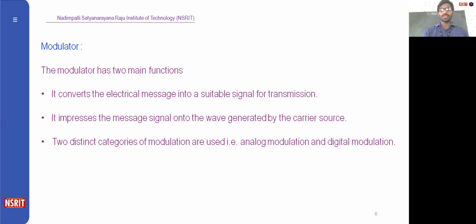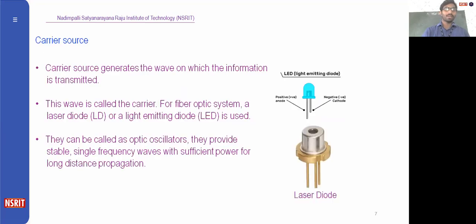Modulators are classified into two types: analog modulation and digital modulation. Since we are dealing with optical sources, we use two optical sources: the Light Emitting Diode, abbreviated LED, and the Laser Diode. The carrier source generates the wave on which the information is transmitted. For fiber optics, a laser diode or a light emitting diode is used — they can be called optic oscillators, providing stable signal frequencies with sufficient power for long distance propagation.